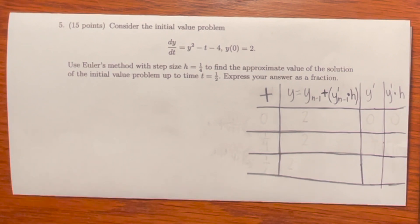The only thing that we need to memorize is this equation right here. y is equal to y of n minus 1 plus y prime of n minus 1 times h.